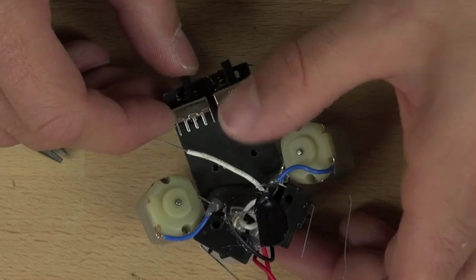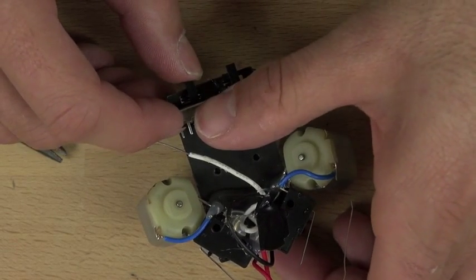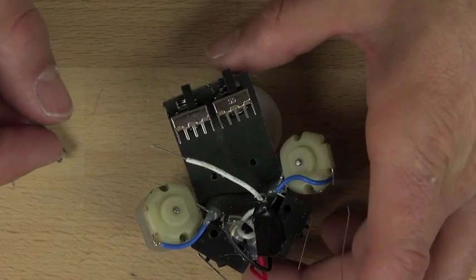So once those are in place, the hot glue actually dries fairly quickly on the metal surface because it helps to conduct the heat away from the glue.